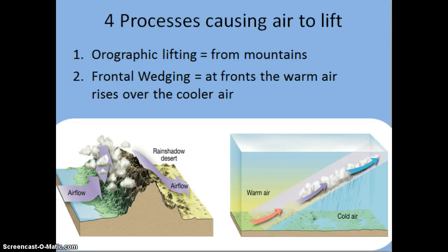The way we get clouds is because the air lifts. One reason air lifts is orographic lifting — when we are near mountain ranges, the air flow cannot go through a mountain, so it must go up. When the air goes up the mountain, we call it orographic lifting. The air then condenses as it cools, giving us the formation of clouds.